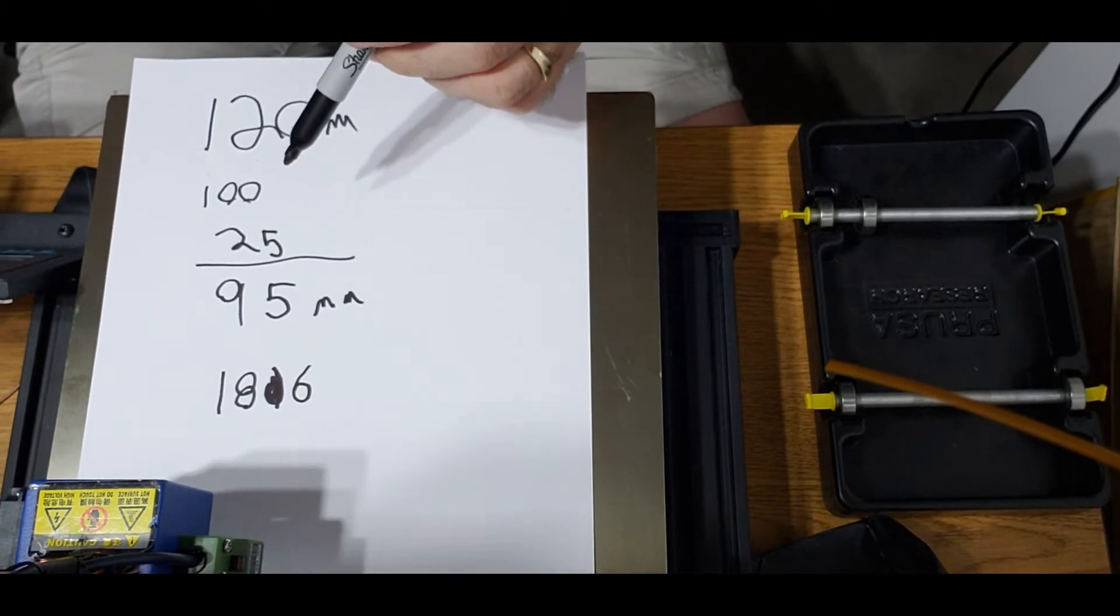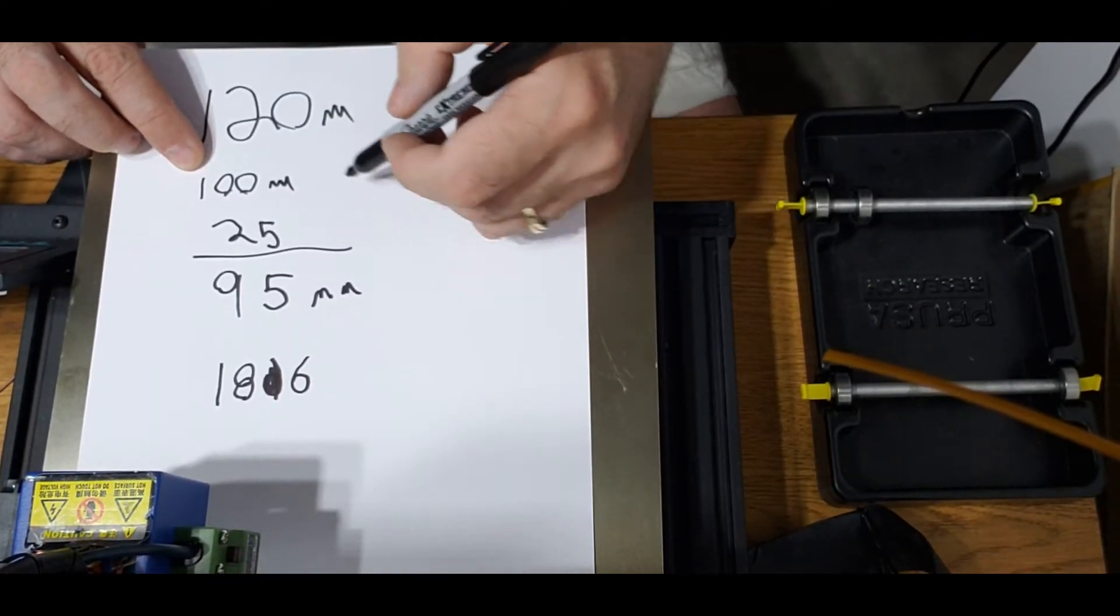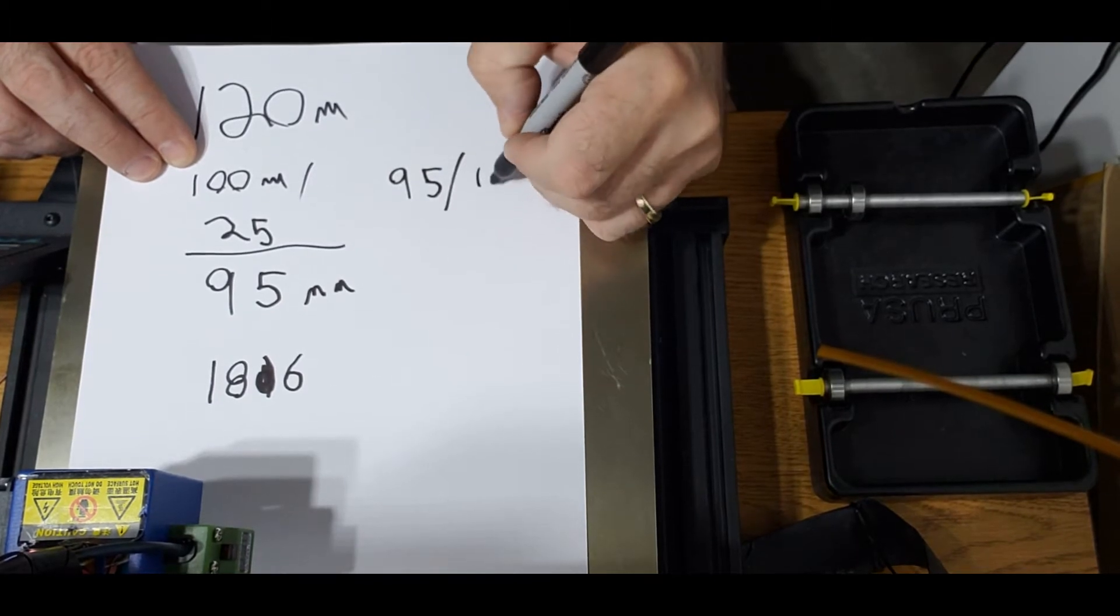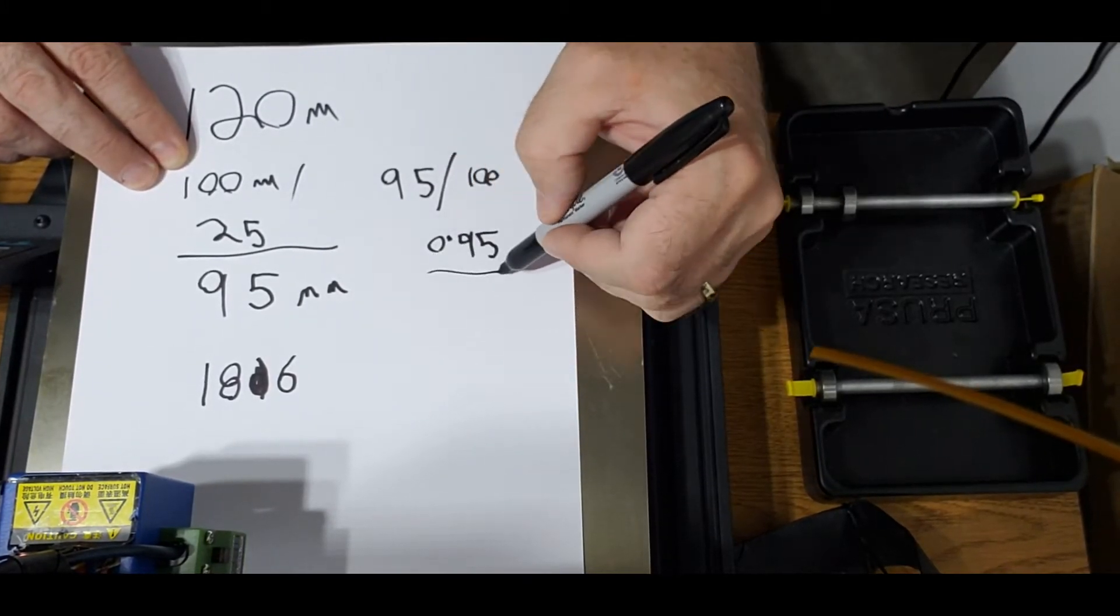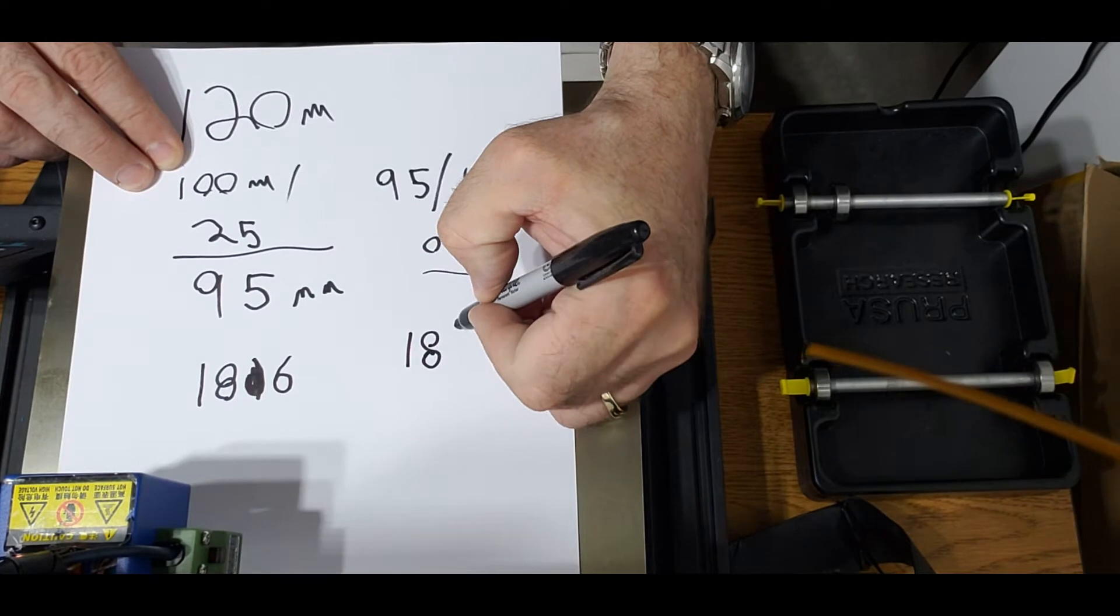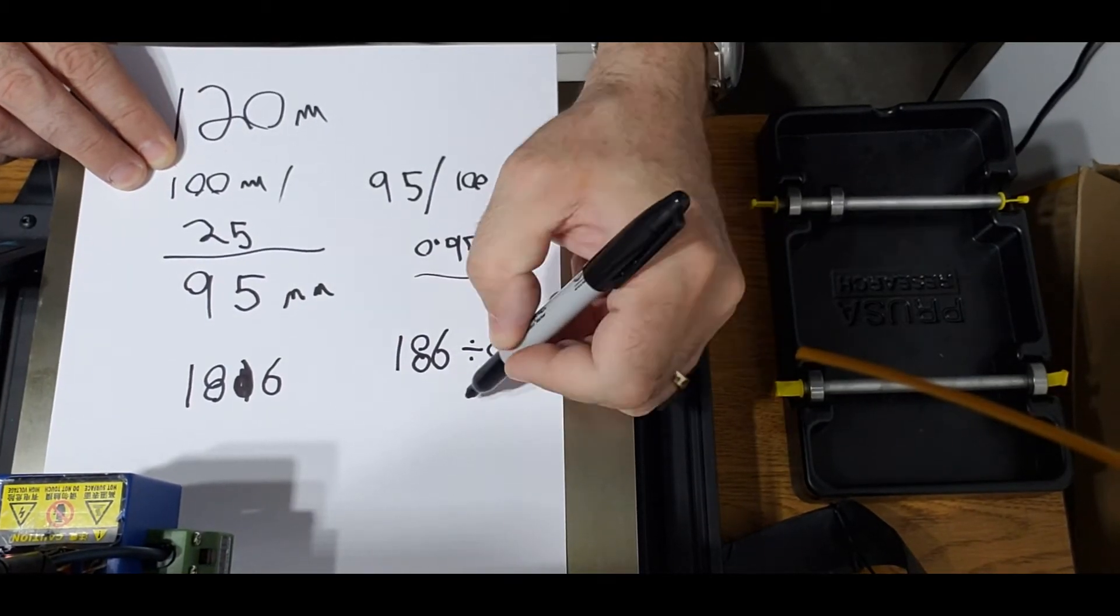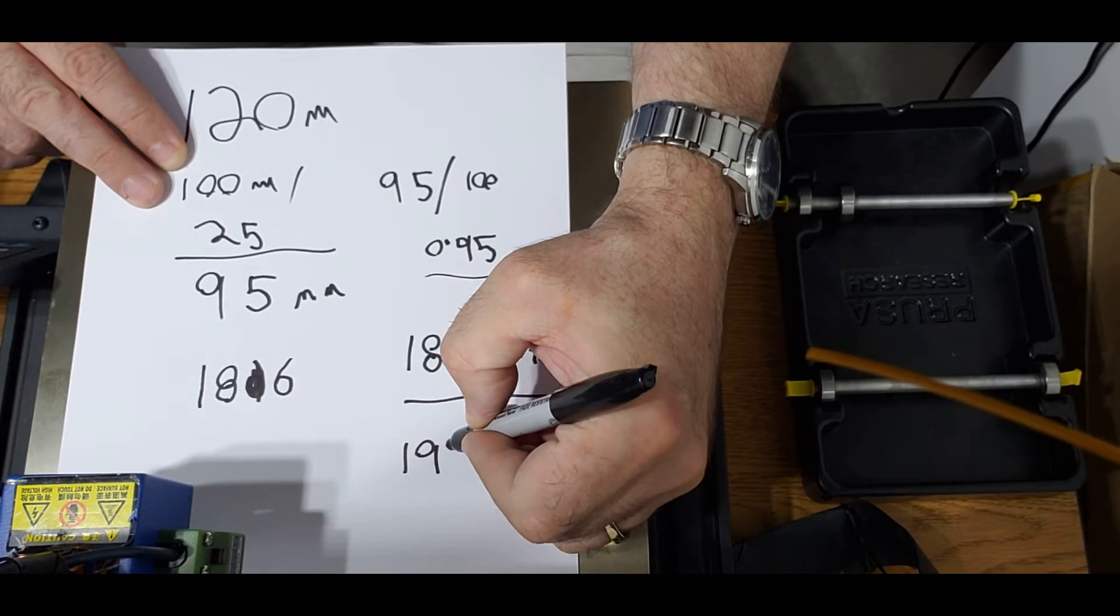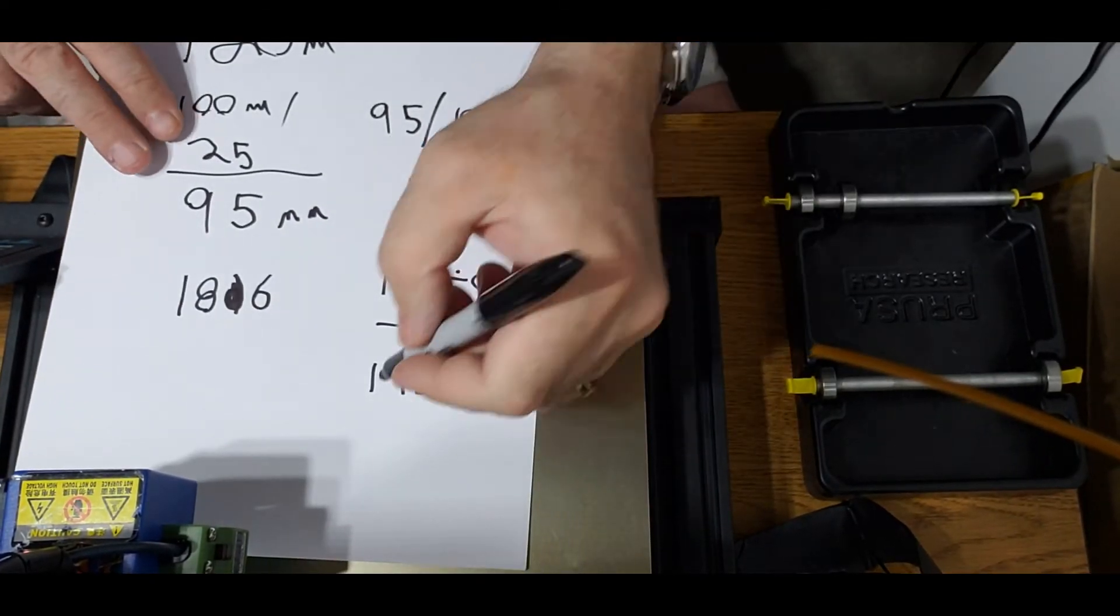What I want to do is I wanted to extrude 100 mils, I got 95. We're going to divide 95 by 100, and that's going to get us to 0.95. Then we're going to divide our E-steps, our 186, divided by 0.95. And that's going to give me our new E-step value, which is 195.789. That's my new value.